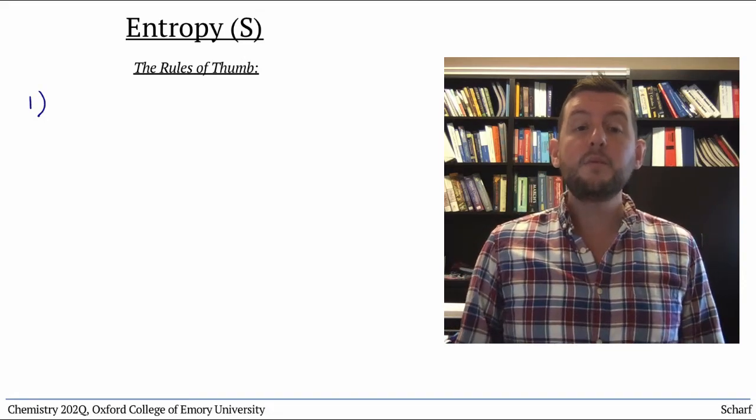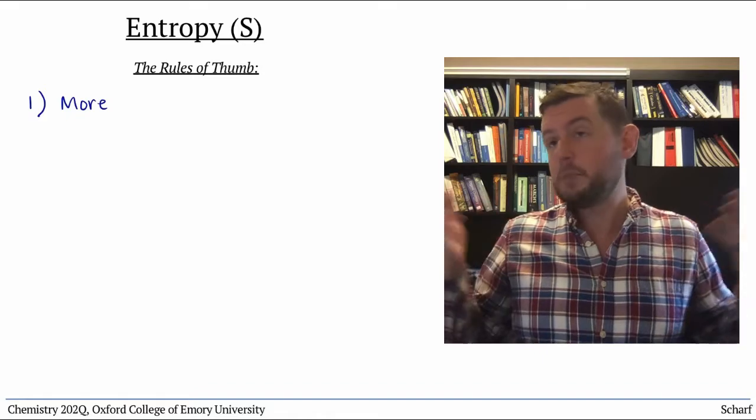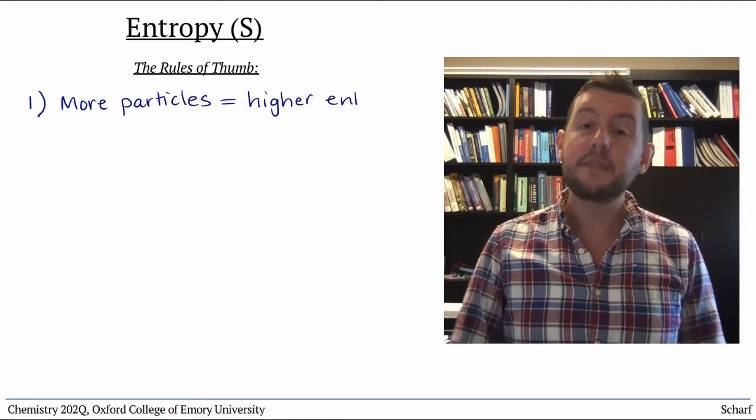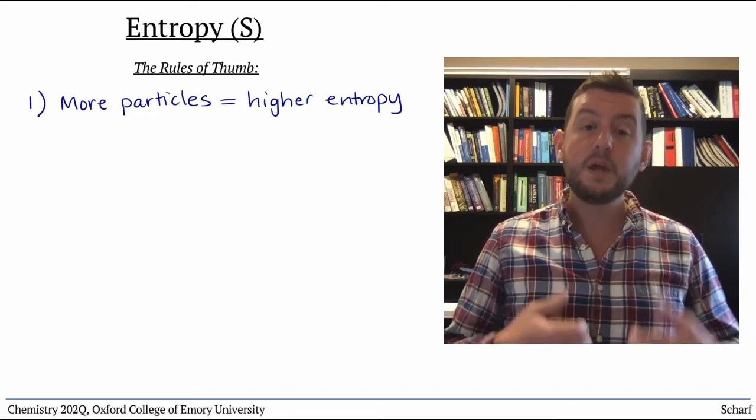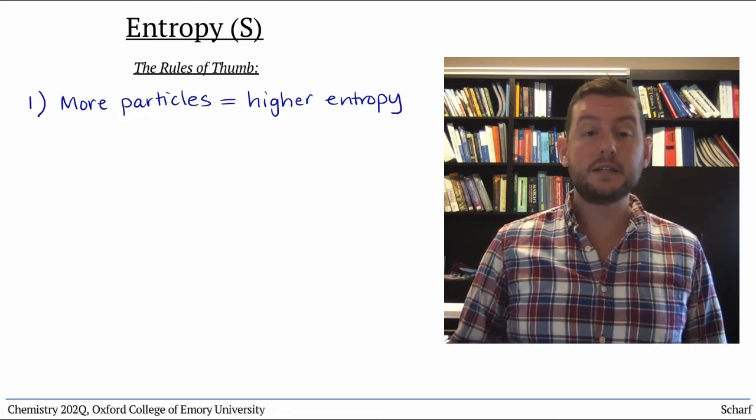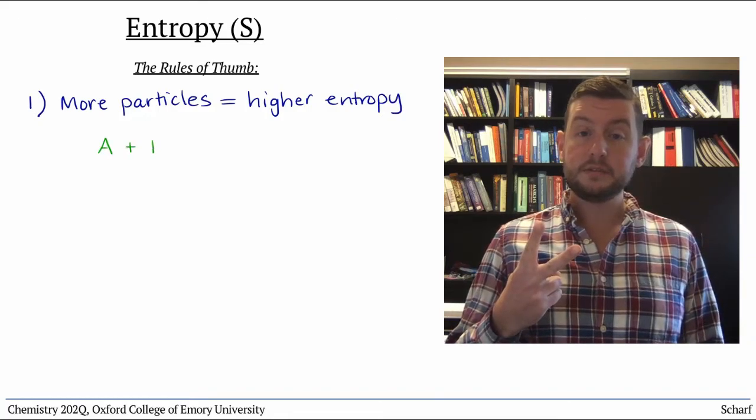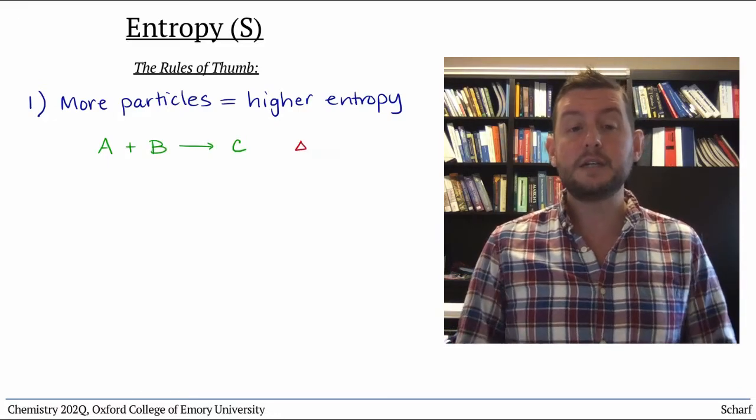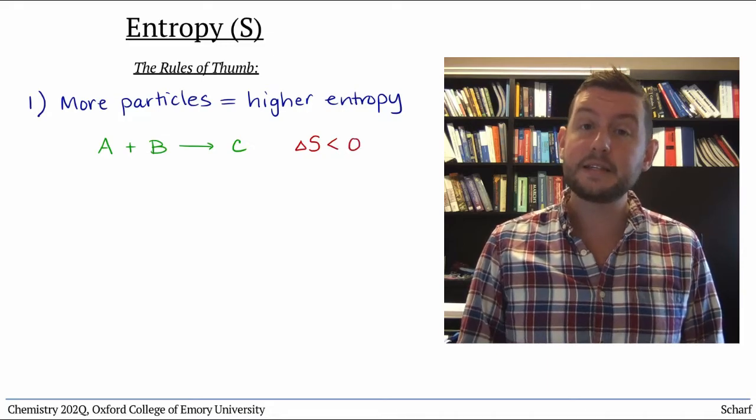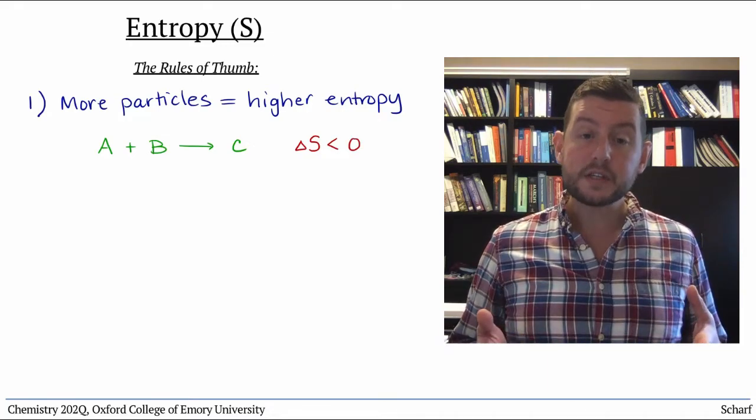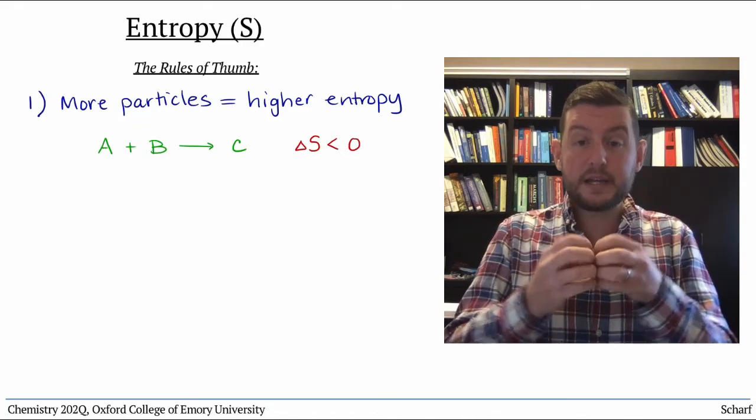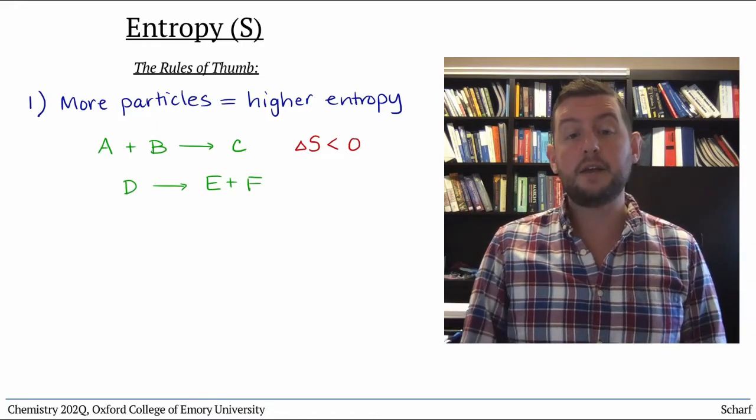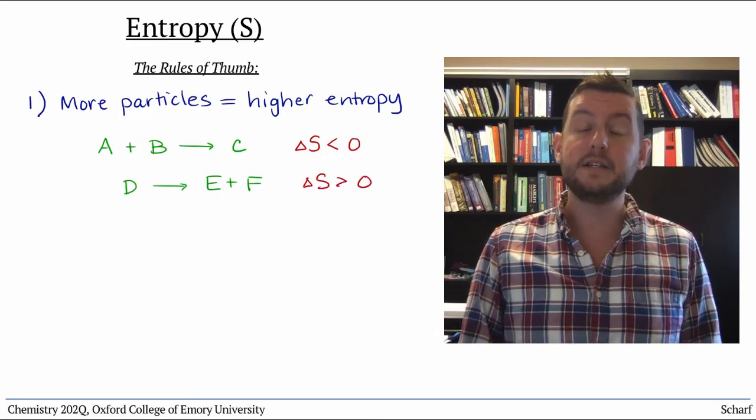First, the more particles, molecules, atoms, or ions are present, the higher the entropy. So if a chemical reaction takes two molecules and turns them into a single molecule, there is generally a decrease in entropy. Delta S is negative. Conversely, if a reaction breaks one molecule into two, then there's an increase in entropy. Delta S is positive.